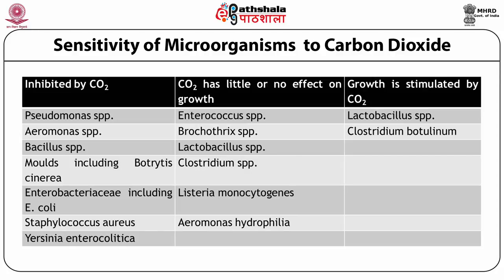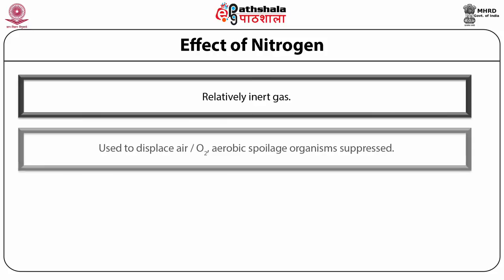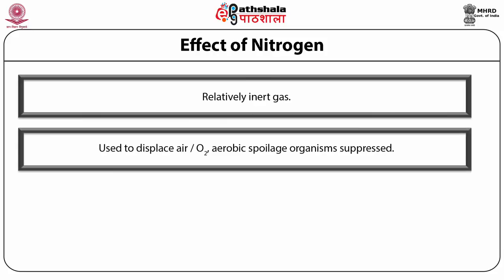The growth of gram-negative bacteria is inhibited more than that of gram-positive bacteria. The effects of carbon dioxide are markedly temperature dependent, and it is therefore imperative that the integrity of temperature control across the supply chain be maintained. It has been observed that germination of spores of Clostridium botulinum may be stimulated by carbon dioxide. Nitrogen is a relatively inert gas used to displace air, and in particular oxygen, from MAP.